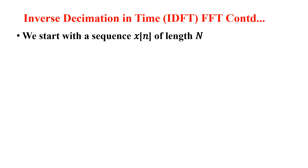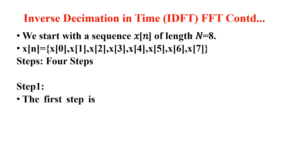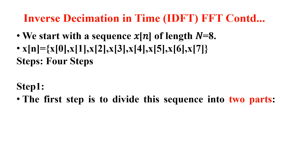We start with a sequence x(n) of length N = 8. So x(n) consists of x(0), x(1), x(2), x(3), x(4), x(5), x(6), and x(7). There are basically four steps in considering this algorithm.